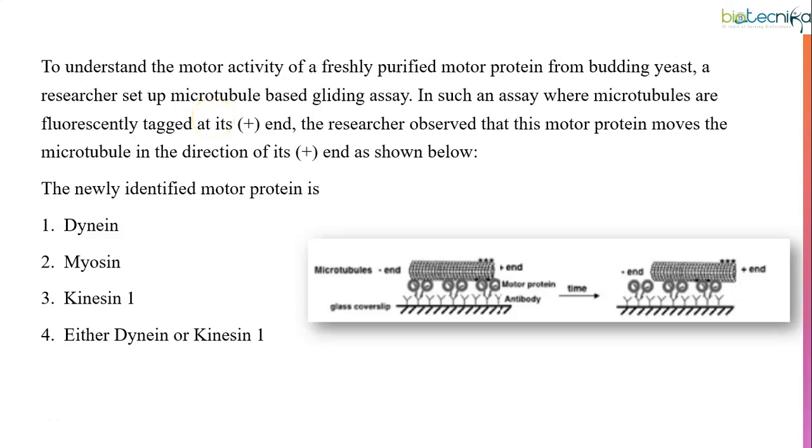Third question - sometimes you can expect image-related questions as well. To understand the motor activity of a freshly purified motor protein from budding yeast, a researcher set up a microtubule-based gliding assay. When microtubules are fluorescently tagged at its plus end, the researcher observed that this motor protein moves the microtubule towards the plus end. You need to identify that motor protein. We have options as dynein, myosin, kinesin, or either dynein or kinesin. The correct answer is dynein.